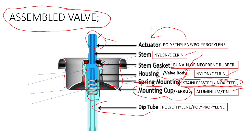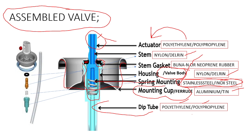Next is the dip tube, which is made up of polyethylene or polypropylene. This covers the different parts present in the aerosol, the materials they are made of, and the particle size distribution within aerosol products.